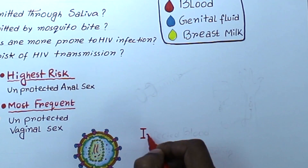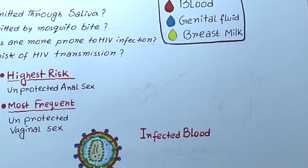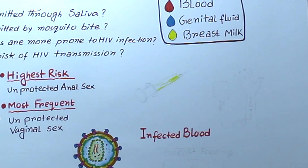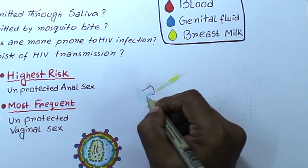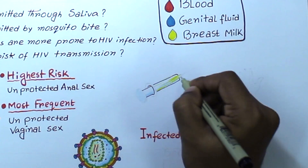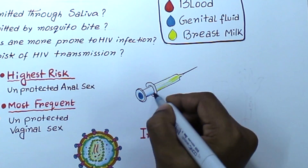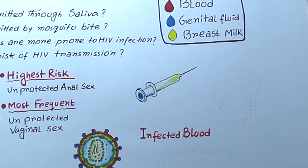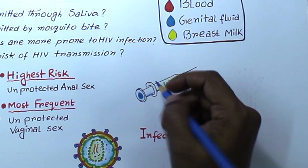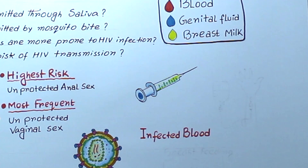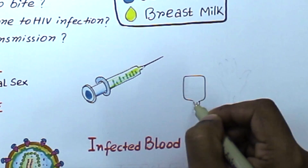The second most common mode of transmission is through infected blood. Sometimes it is due to contaminated needle sharing by IV drug users, or due to accidental needle prick, which is more common in health workers. Another route is infected blood transfusion, which is more common in developing countries.